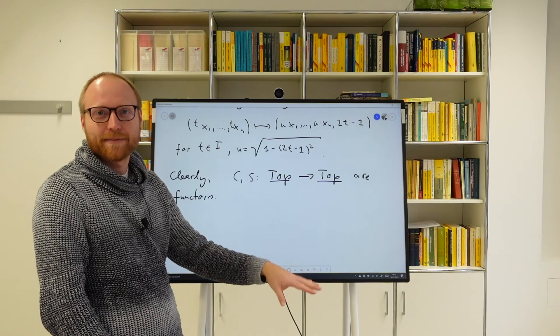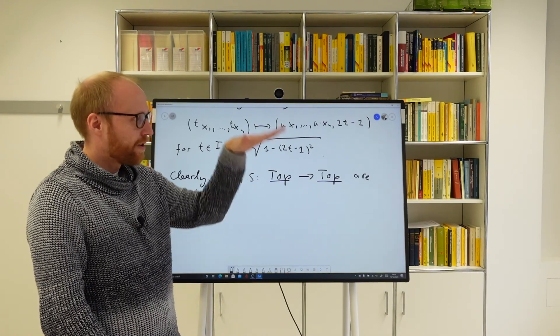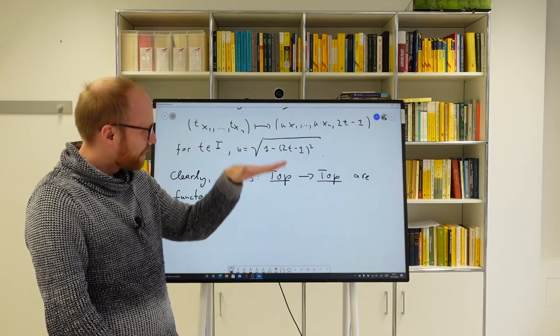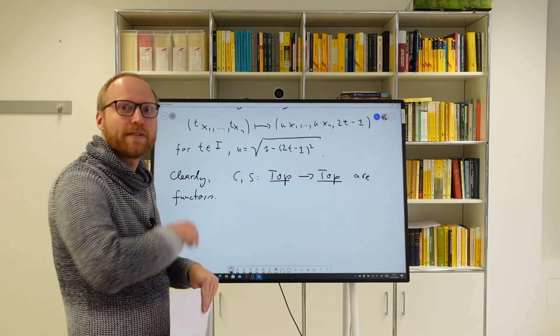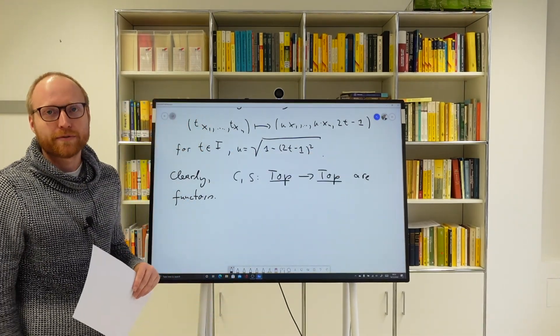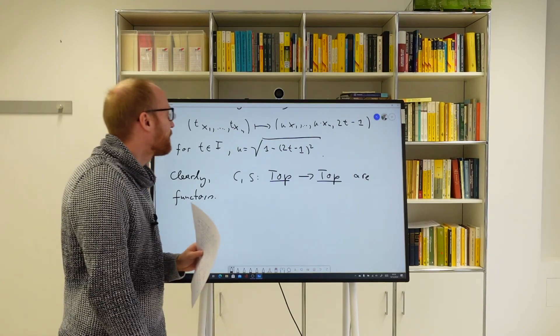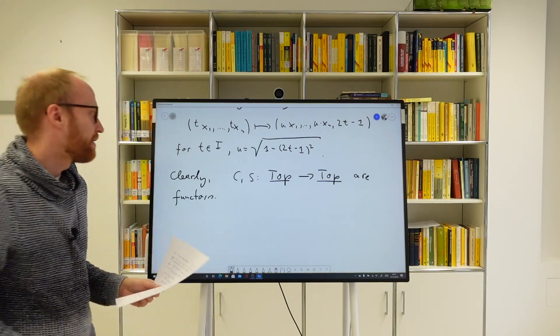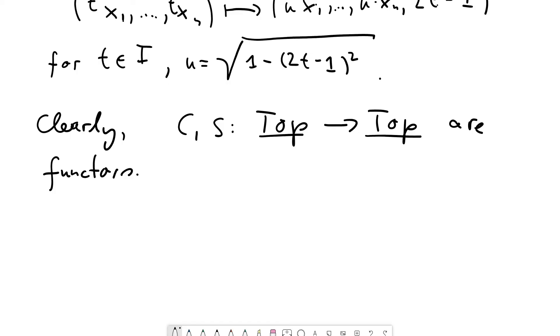You take sort of the space times the unit interval and no matter where you are in the unit interval coordinate, you just use the map f to map the point over. And the same applies to the suspension. Yeah. So just the quotient map.